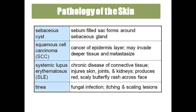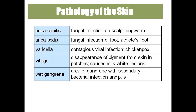Sebaceous cyst is a sebum-filled sac around the sebaceous gland. Squamous cell carcinoma is cancer to the epidermis and is cancerous. SLE — systemic lupus erythematosus — is an autoimmune disease where the body's own antibodies fight its own antigens, affecting the skin, joints, and kidneys, with butterfly-shaped rashes. Tinea is a fungal infection with itching and scaling lesions. Tinea capitis is ringworm infection of the scalp; tinea pedis is fungal infection of the foot, also called athlete's foot.